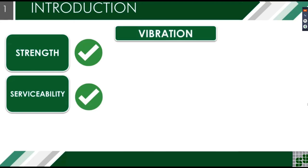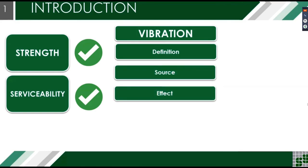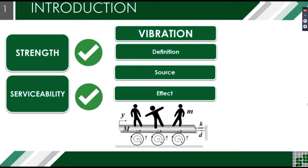Number one: what is vibration? Number two: where does this come from? And number three: how will it affect the structure? We can define vibration as the oscillation motion caused by forces applied directly to the structure, including pedestrian-induced footfall forces such as walking, running, and jogging; machinery and equipment; environmental factors such as wind and seismic; and vehicular traffic. This motion is normally vertical, horizontal, or even torsional, and commonly occurs in pedestrian bridges since this kind of structure is made of lightweight materials and has longer spans.